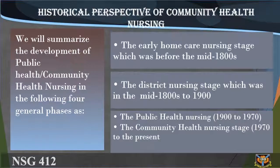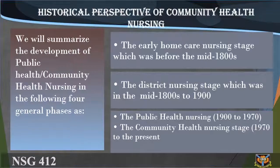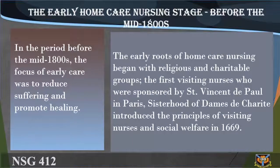We will summarize the development of public health or community health nursing in four general phases: one, the early home care nursing stage, before the mid-1800s; two, the district nursing stage, mid-1800s to 1900; three, the public health nursing stage, 1900 to 1970; and four, the community health nursing stage, 1970 to the present.